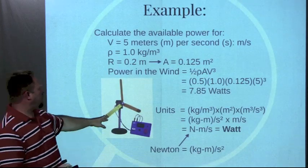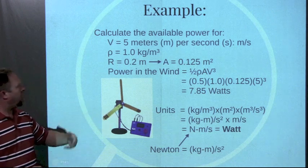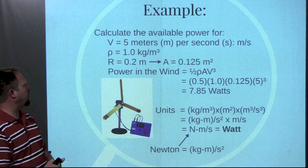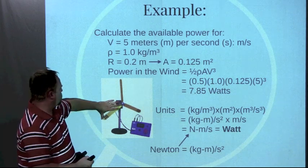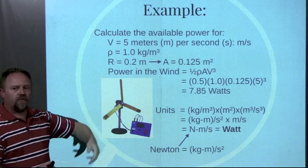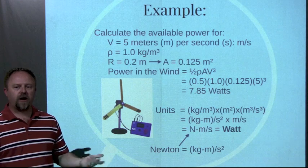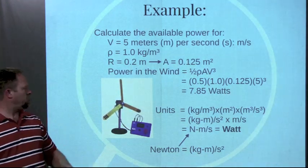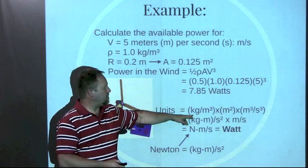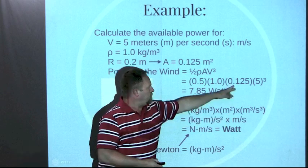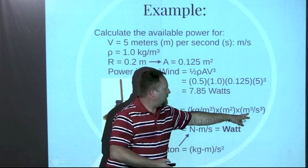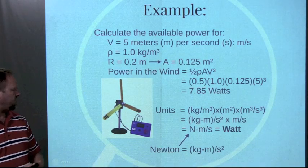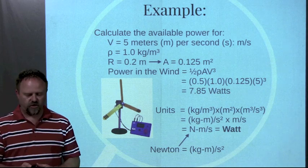For an example, if we look at a small little wind turbine, and we're trying to calculate how much power is available in the air moving through there, let's say the air is moving at five meters per second, and we have a rotor wind blade here has a radius of 0.2 meters, we can calculate the power in the wind to be 7.85 watts. The units, you can calculate the units from the density is in kilograms per meter cubed, the area is in meters squared, and the velocity cubed would be in meters per second cubed. If you do some rearranging of the terms there, you'll see we'll get watts for the units.